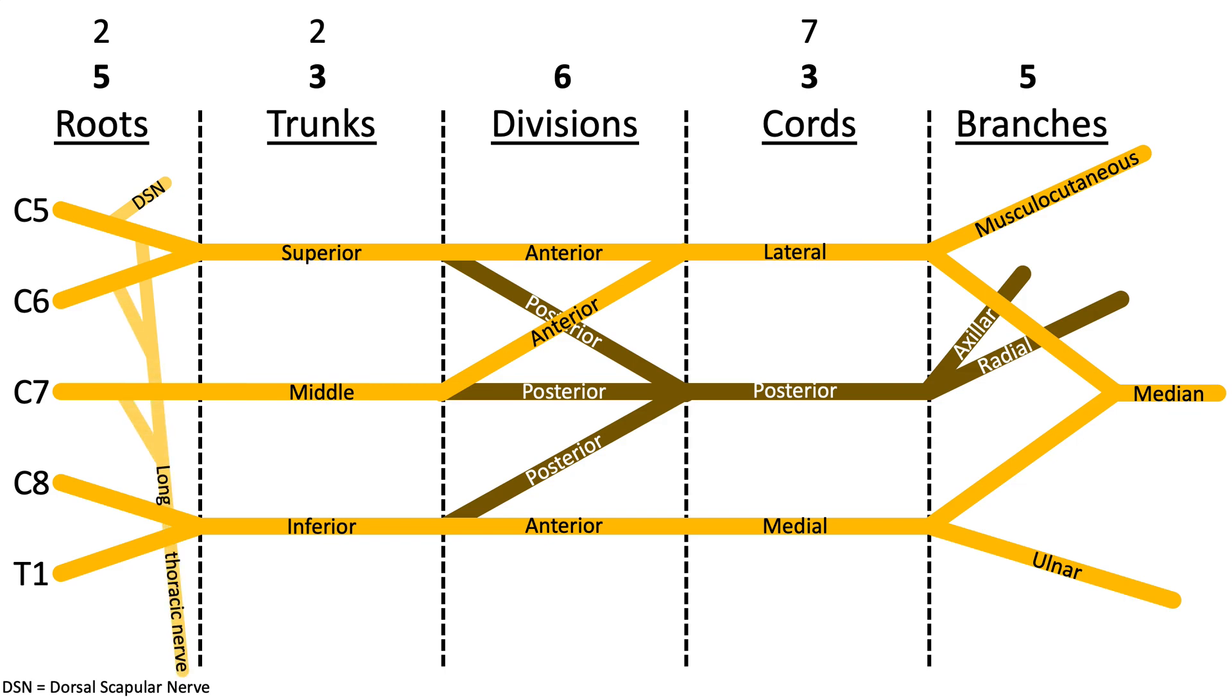From the trunks there's going to be two collateral branches from the superior trunk: the suprascapular nerve and the nerve to the subclavius.